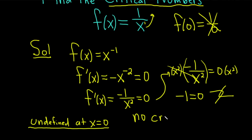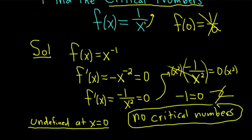So there are no critical numbers in this particular example. It's a simple problem mathematically, but in terms of understanding the definition of critical numbers it's beautiful. Critical numbers are numbers in the domain of the original function where the derivative is 0 or undefined. The derivative is undefined at 0, but 0 is not in the domain of the original function — so it's not a critical number. Setting the derivative equal to 0 gave a contradiction, so no candidates there either. Hopefully this has helped someone learning mathematics. Good luck.